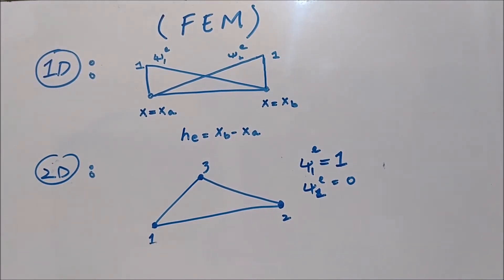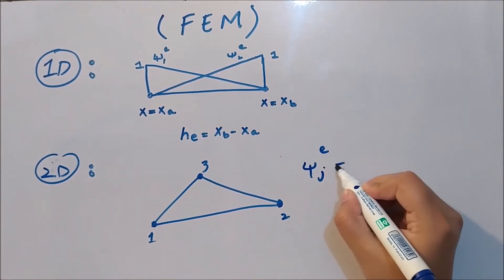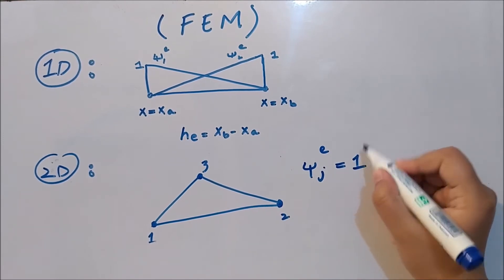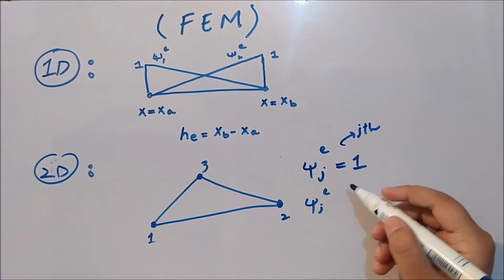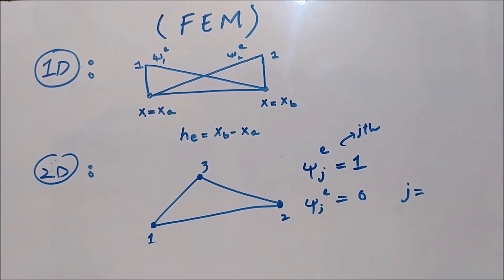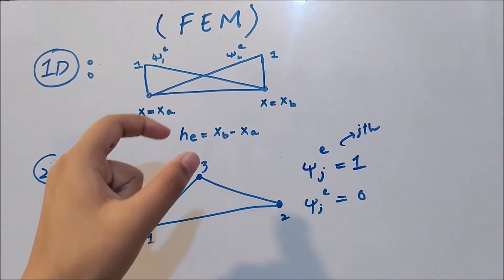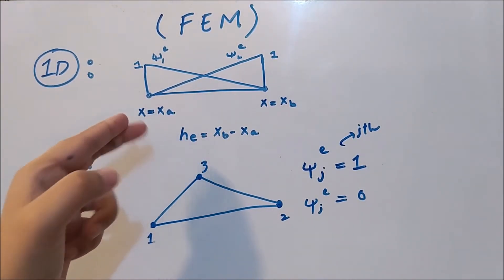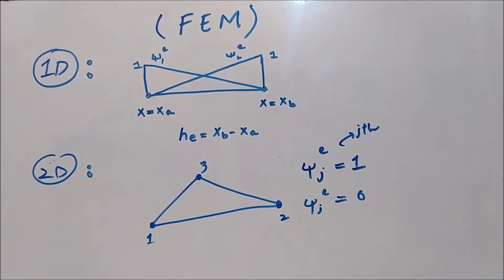Generally, the shape function at the jth node equals one, and at any other node equals zero. So in one dimension with two nodes per element there are two shape functions; in two dimensions with three nodes per element there are three shape functions. As the number of nodes increases, the number of shape functions increases as well.